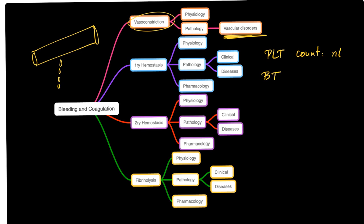How about doing the bleeding time? This test is for platelet number, while this other test is for platelet function — there is a huge difference. Platelet number is normal. How about platelet function? Platelet function is normal, yes, but platelets cannot function if the blood vessel is not normal. So bleeding time could be high, or it could be normal as well. How about PT and PTT? PT — prothrombin time — is for the extrinsic coagulation pathway, so it's going to be normal. PTT is for the intrinsic coagulation pathway and it's going to be normal.